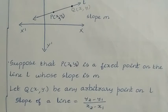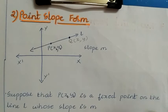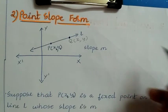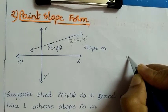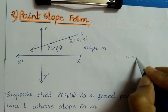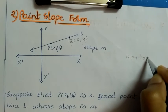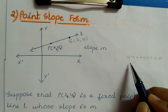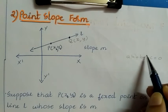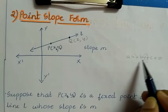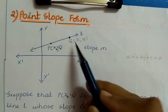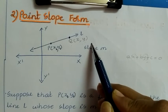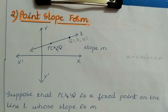I have taken coordinates x and y for point Q because the general equation of a straight line is ax + by + c = 0. This is the general form of the equation of a straight line, where x and y are variables. That is the reason I have taken coordinates x and y for the arbitrary point Q. Now let us derive the equation.